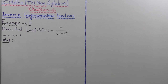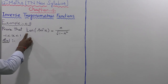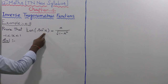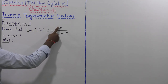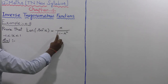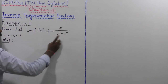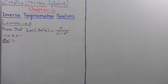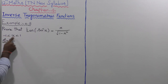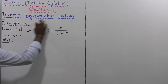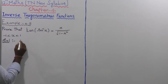Example 4.11. Prove that tan of sin inverse of x is equal to x divided by root of 1 minus x squared, where minus 1 is less than x is less than 1.